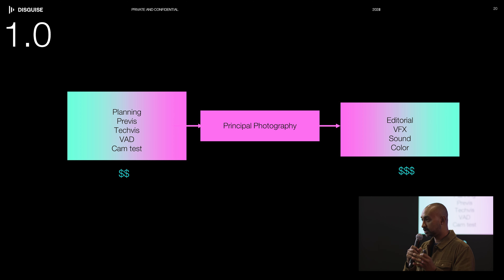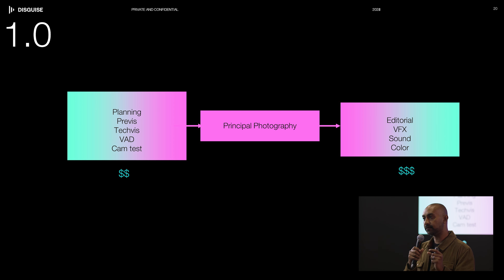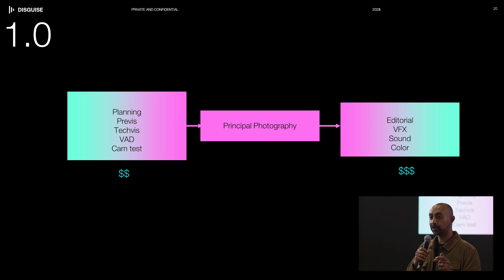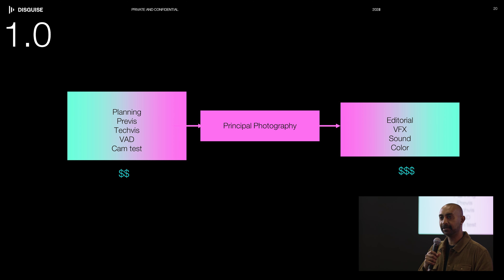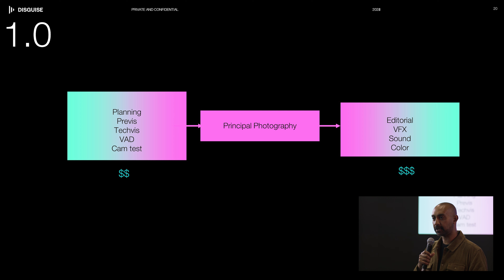When you go into principal photography, it's more streamlined. The cost saving comes at the end — there's less need for reshoots and less need for visual effects. That is the true savings of virtual production: not only slightly cheaper, but more importantly, faster. This is why you see shows like The Mandalorian deliver multiple seasons within a single year, because they're able to cut back on the post-production side.